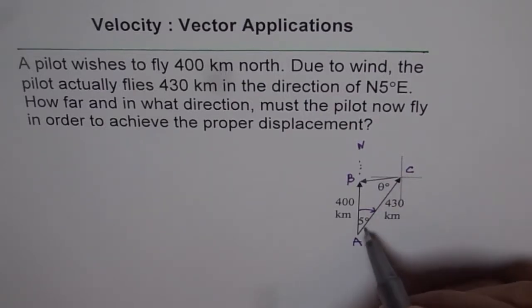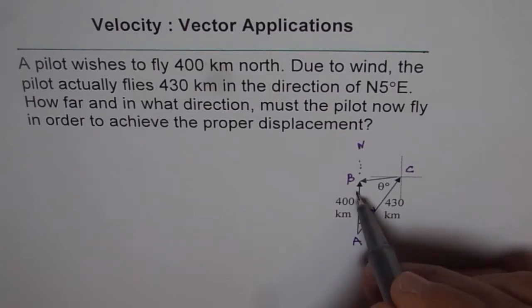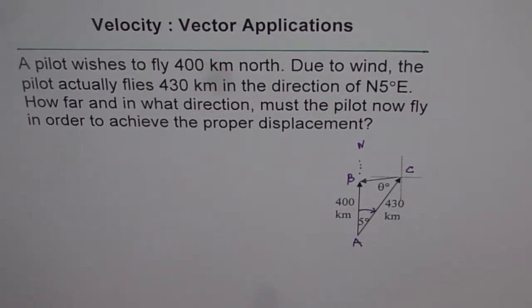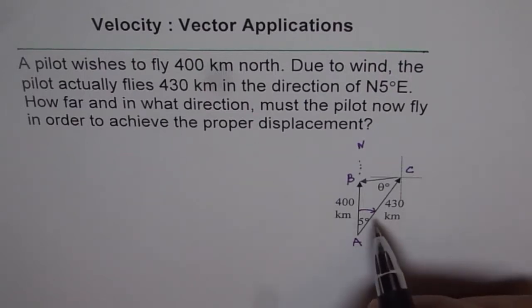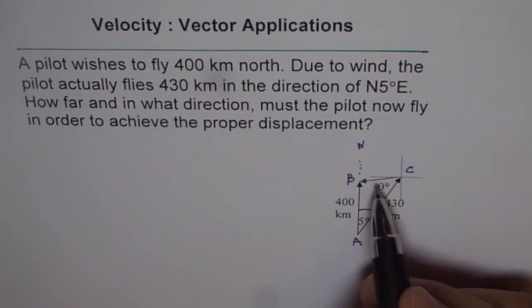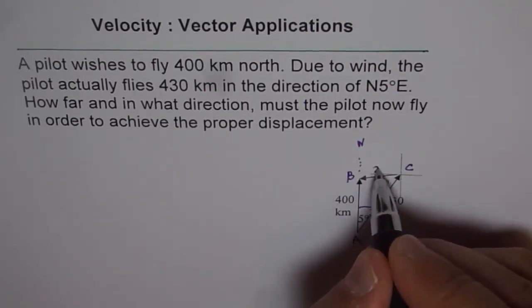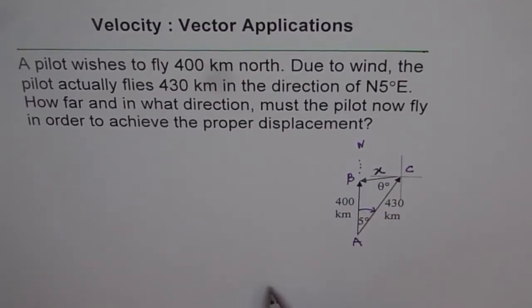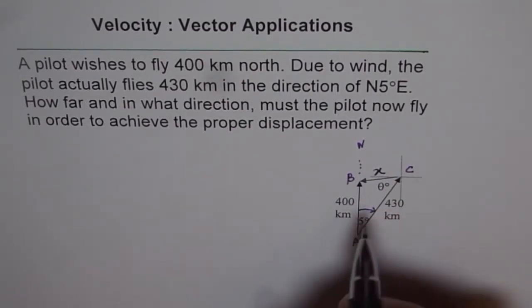When you look at this triangle, what do you get? You get two sides with included angle. And whenever you have two sides with included angle, then you can solve the triangle using cosine law. You will use cosine law and find the value of x. Let's call this distance x which now the pilot needs to cover.